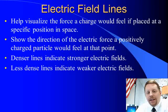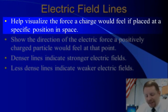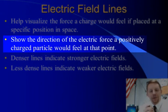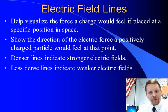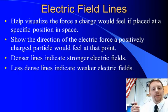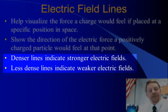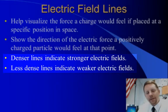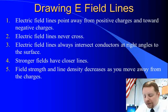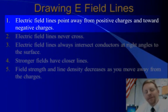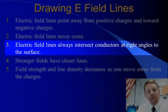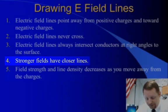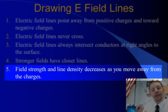Just like with the gravitational field, we visualize the electric field by thinking about electric field lines. They help us see the force a charge would feel if placed at a specific position in space, and they show the direction of the electric force on a positive charge. Denser lines indicate stronger electric fields; less dense lines indicate weaker fields. Electric field lines point away from positive charges and toward negative charges. They never cross each other, and they always intersect conductors at right angles to the surface. Field strength and line density decrease as you move away from the charges, because it's an inverse square relationship.